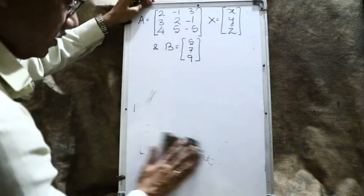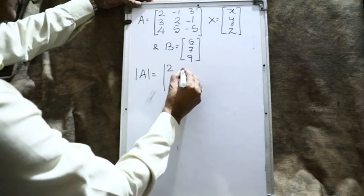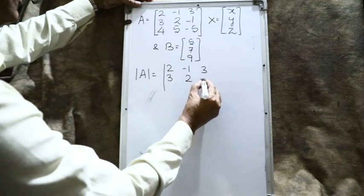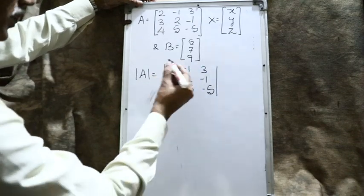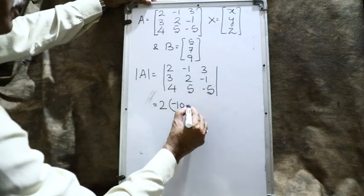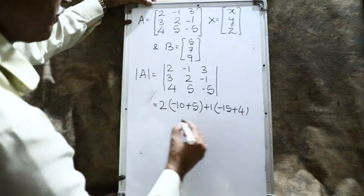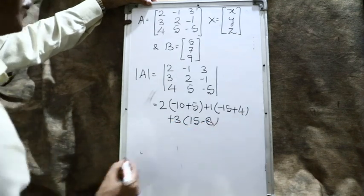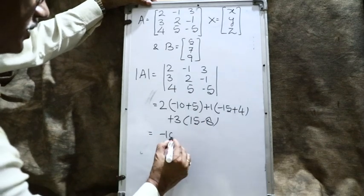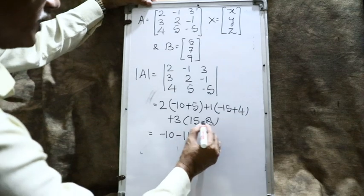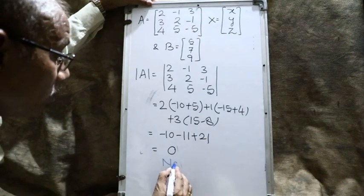First we will find whether matrix A is singular or non-singular. Determinant A = [2, −1, 3; 3, 2, −1; 4, 5, −5]. Expanding along the first row: 2×(−10+5) − (−1)×(−15+4) + 3×(15−8), giving 2×(−5) + 1×(−11) + 3×7 = −10 − 11 + 21 = 0. So the determinant is zero, meaning matrix A is a singular matrix and A inverse will not exist.